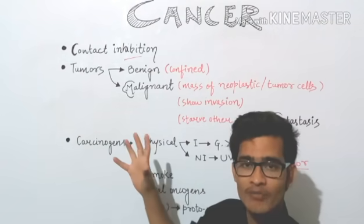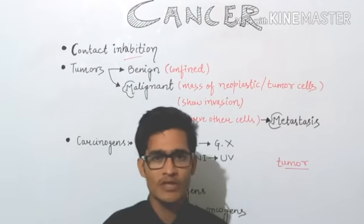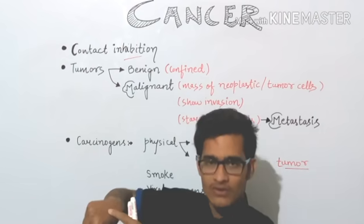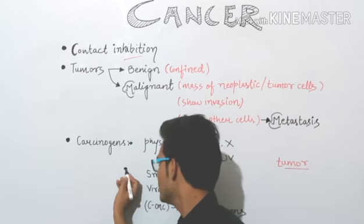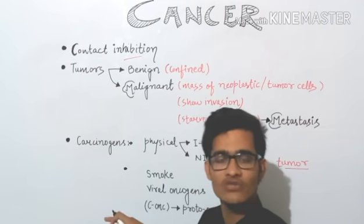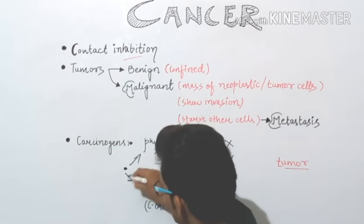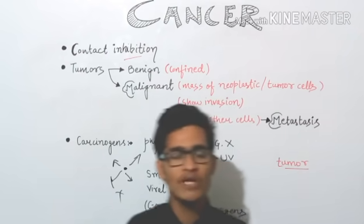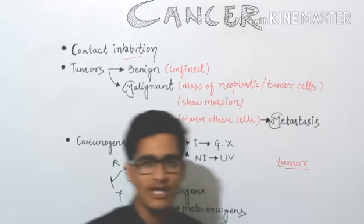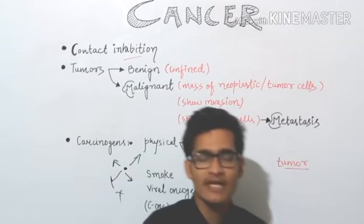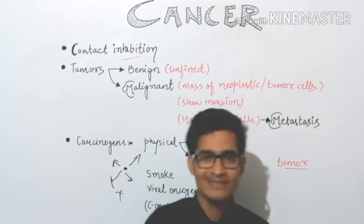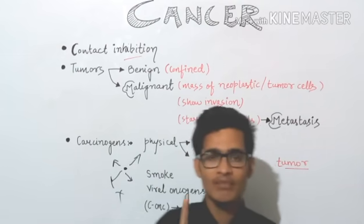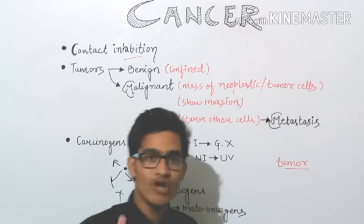In the case of benign tumor, it is confined to a particular place. This is the very important property — it will not spread. For example, if there is a tumor in a particular place, it will stay in that place only. It will not spread further. It is confined to that particular place where it is found.